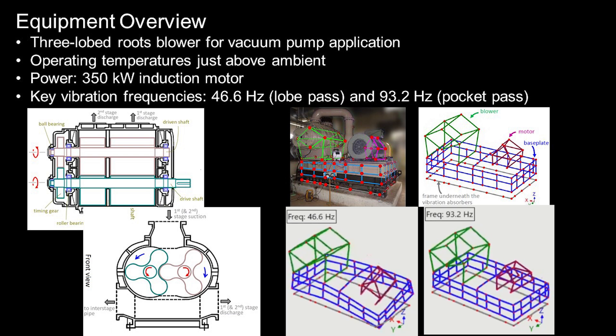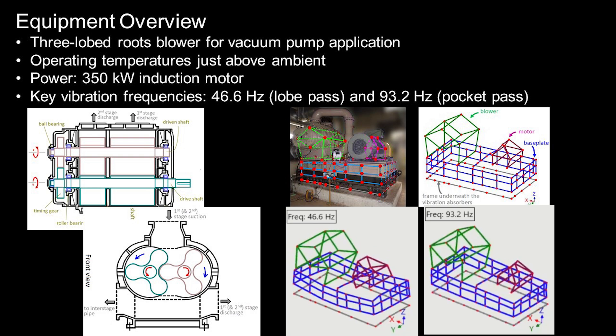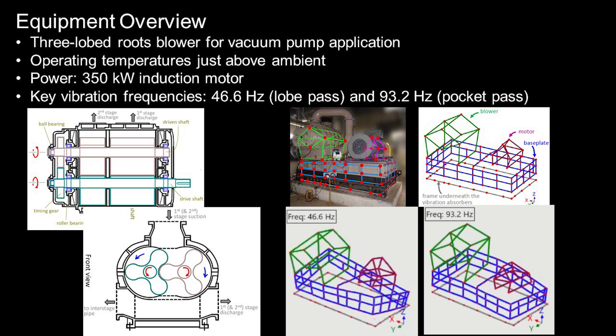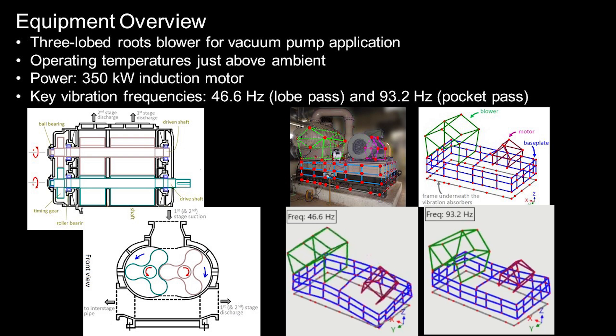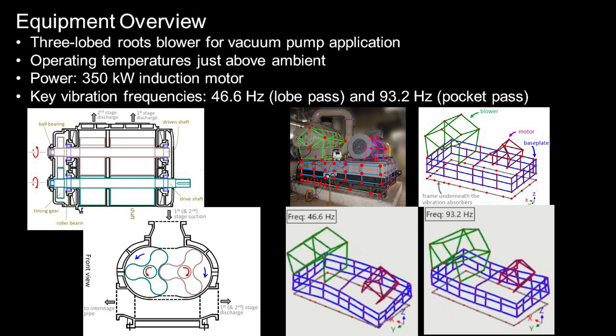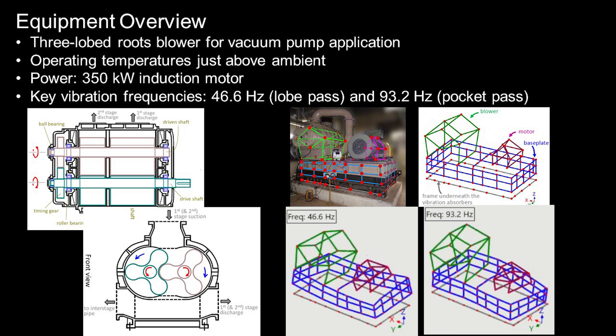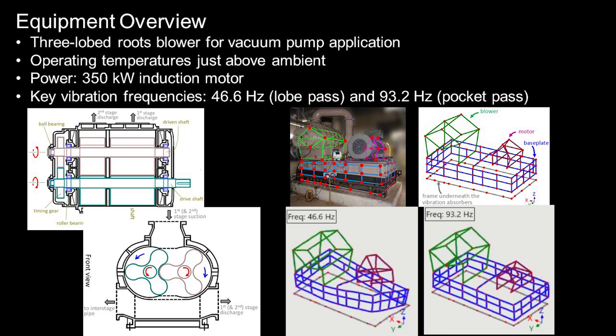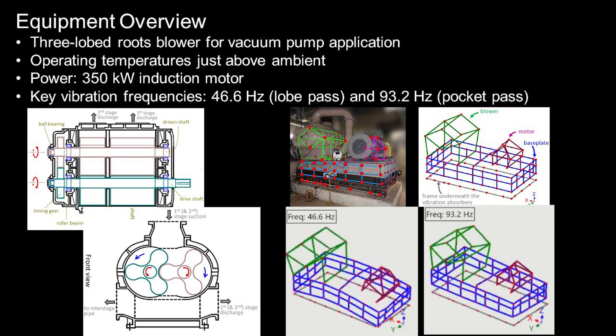This system has been repeatedly failing due to high vibrations, which occurred at two key frequencies: 46 Hz, which is lobe pass frequency, and 93 Hz, which is pocket pass frequency. These issues were primarily affecting the blower's bearings, drive shafts, side cover, internal partition wall, and base plate.